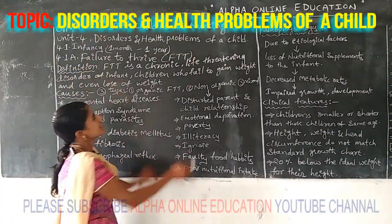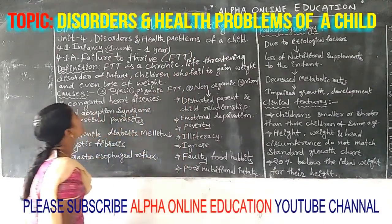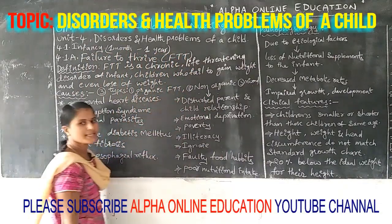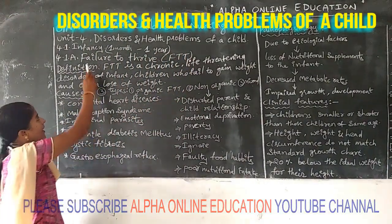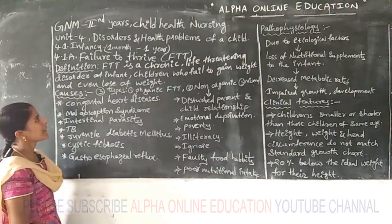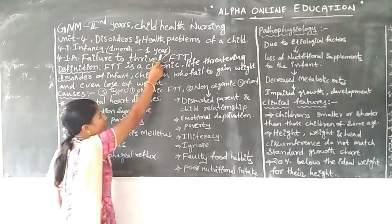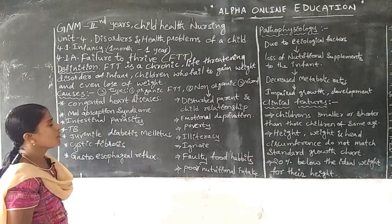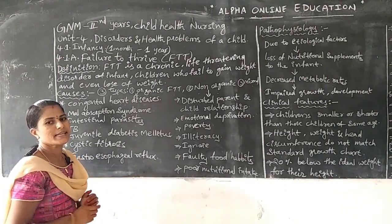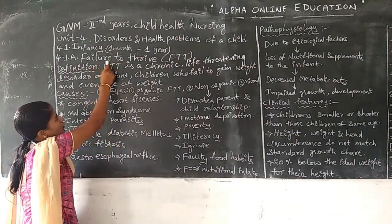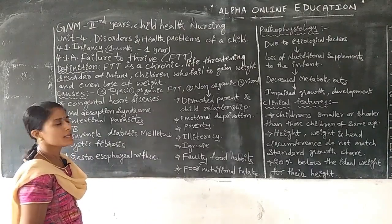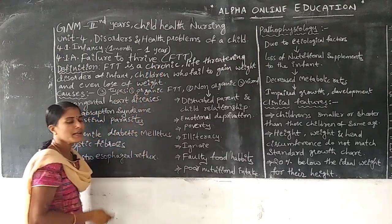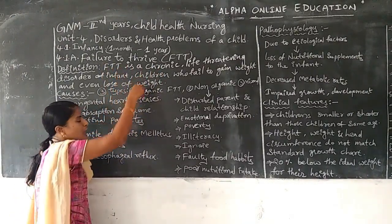Okay, JNM second year students, child health nursing subject here, unit 4th: disorders and health problems of a child. In this, infancy disorders — infancy means 1 month to 1 year of age group children, we are called as the infancy. Here, one problem is the developmental stage — the problem is the failure to thrive. Failure means lack of success; thrive means growth. Failure to thrive means growth failure.